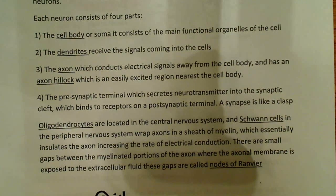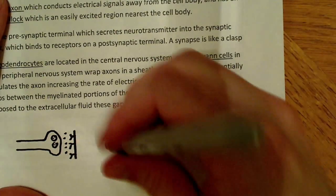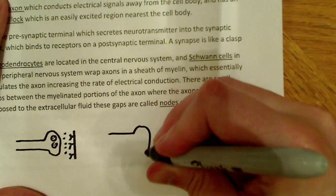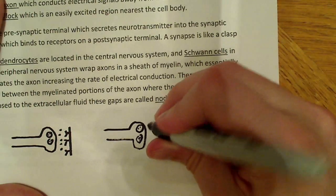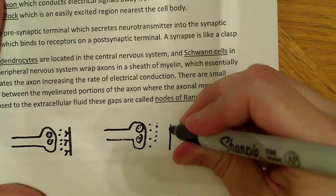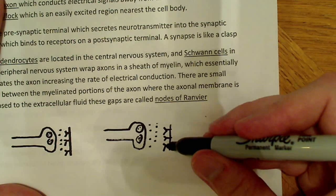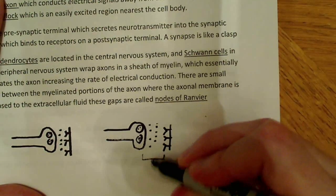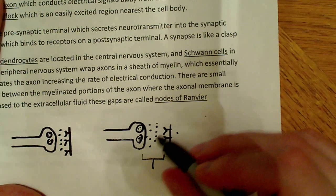The fourth part is the presynaptic terminal, which secretes neurotransmitter into the synaptic cleft, which then binds to receptors on a postsynaptic terminal. A synapse is like a clasp — the presynaptic terminal contains small vesicles filled with neurotransmitter. Those vesicles release neurotransmitter into the synaptic cleft, and on the other side is the postsynaptic terminal, which has receptors — represented as Y-shapes — for that neurotransmitter.